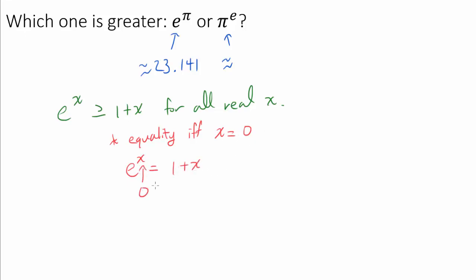As we can see right away, when x is 0, we get 1 is equal to 1. And the fastest way of proving this is by considering the graph of e to the x and 1 plus x.